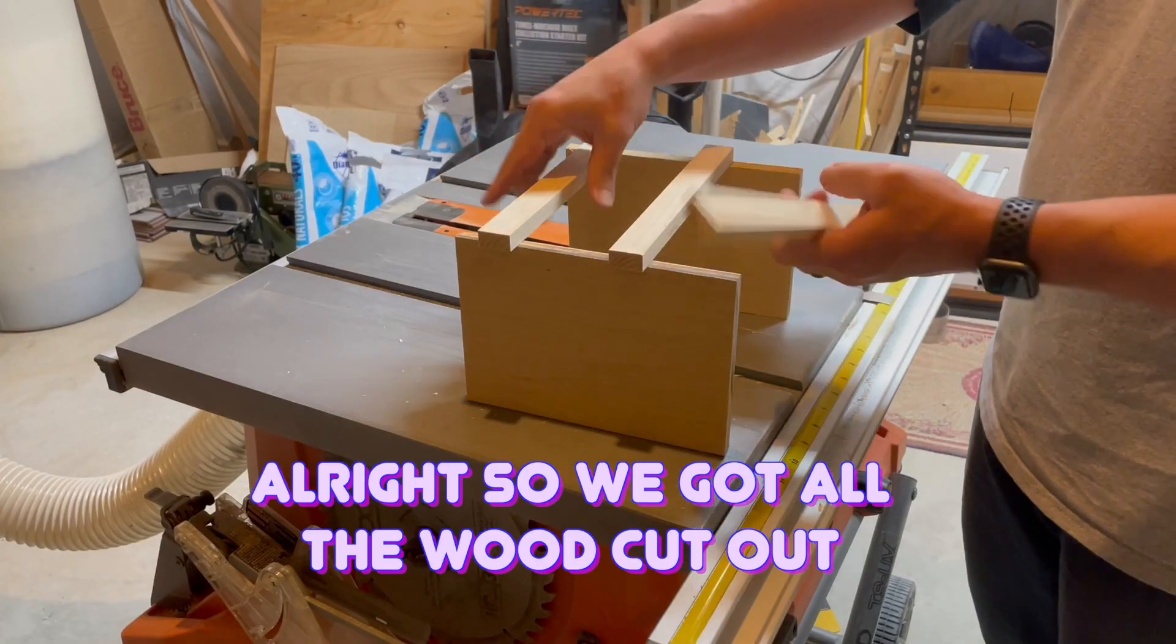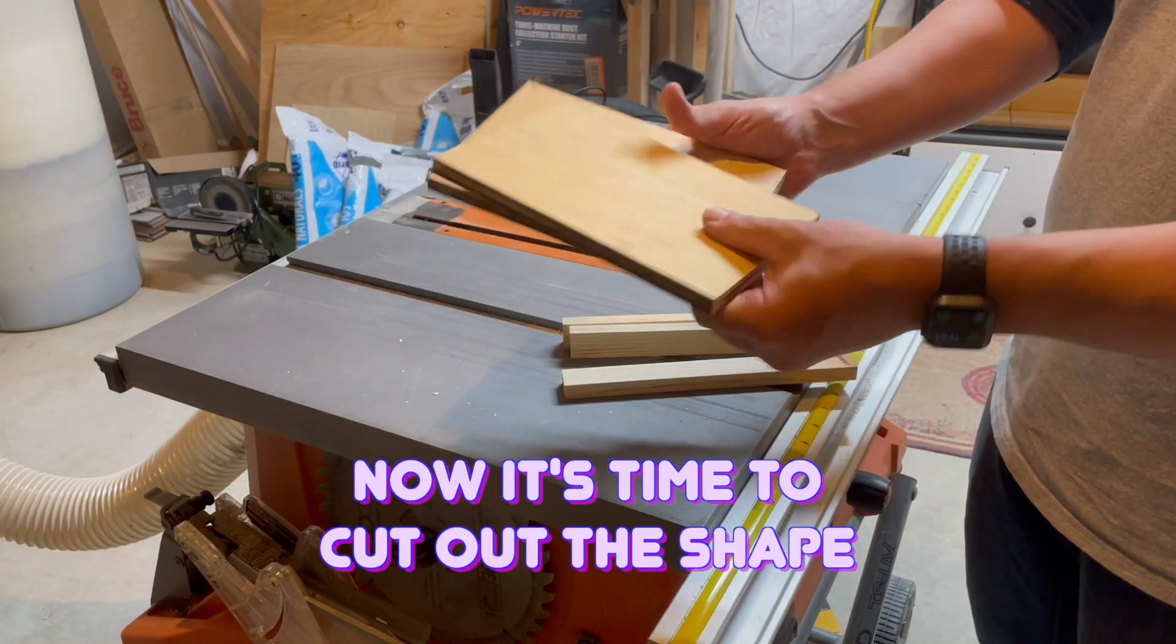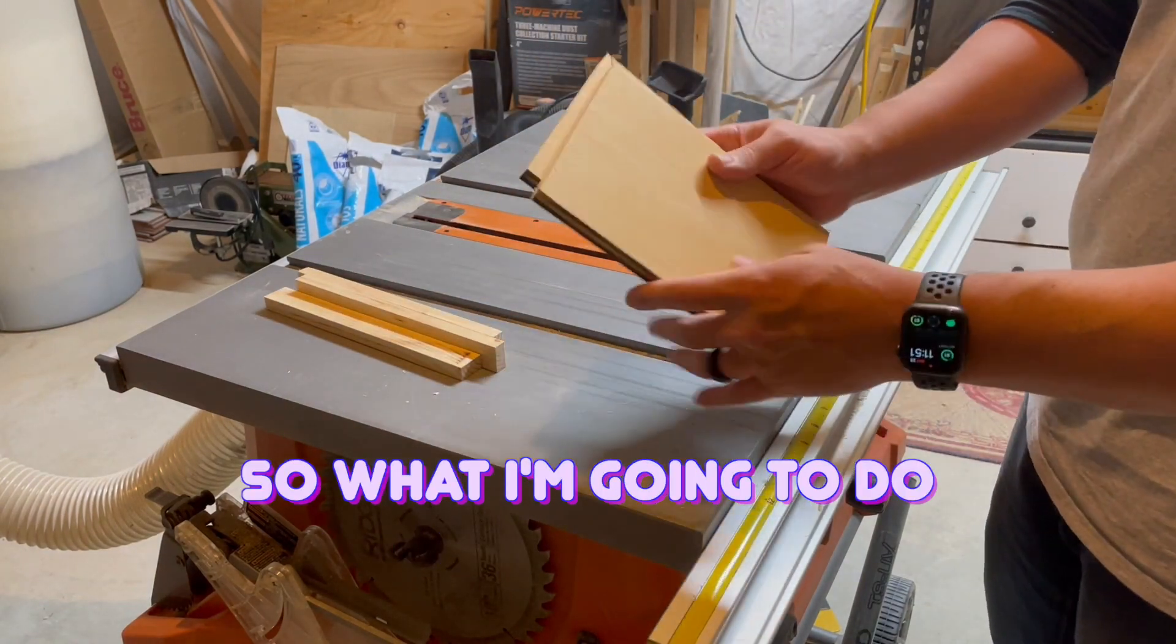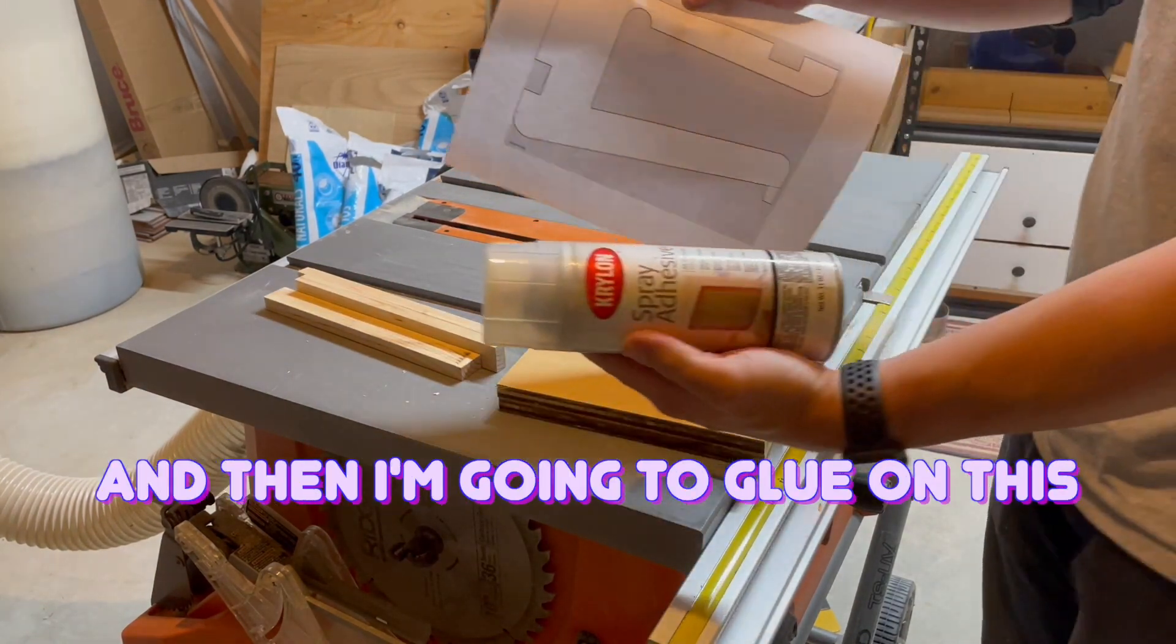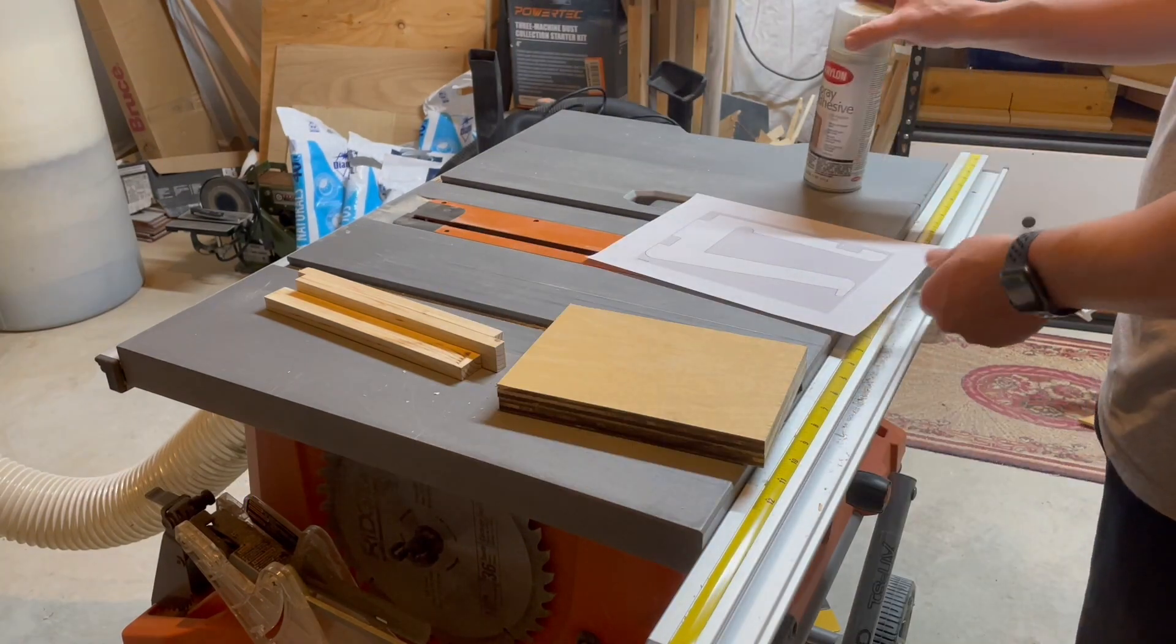All right, so we got all the wood cut out that we need. Now, it's time to cut out the shape. So, what I'm going to do is I'm going to stick these together, and I'm going to glue on this. Let's get to it.